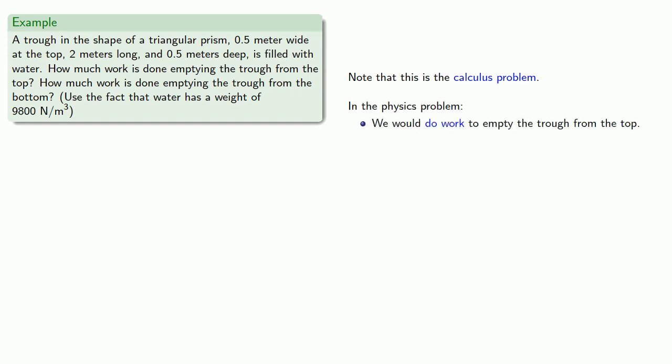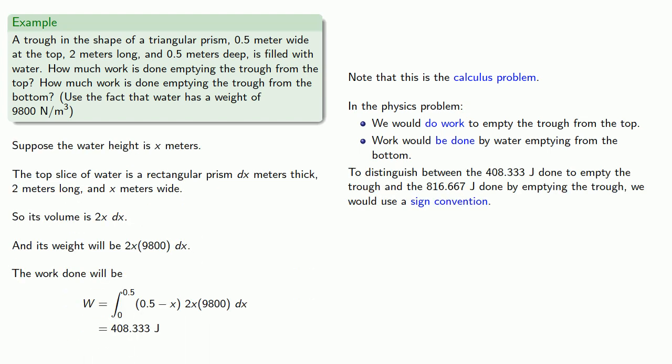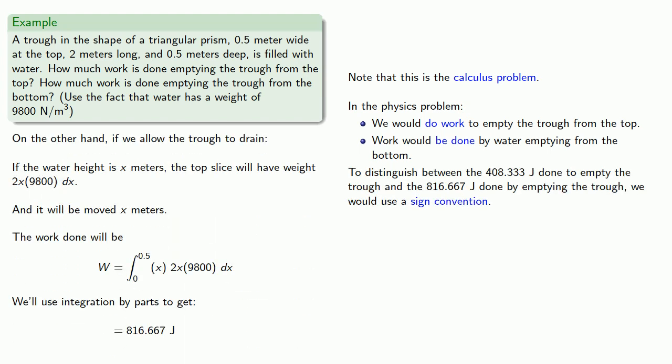We would do work to empty the trough from the top, but work would be done by water emptying from the bottom. To distinguish between the work done to empty the trough and work done by emptying the trough, we would use what's known as a sign convention.